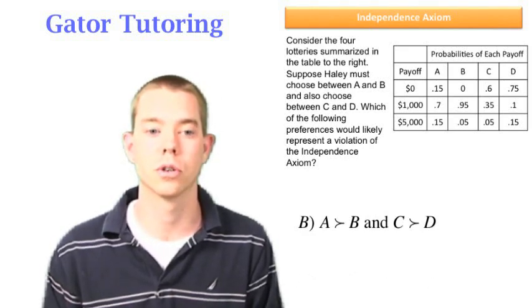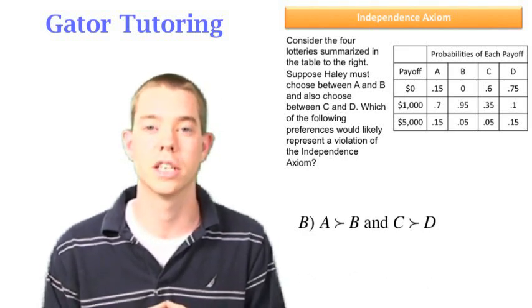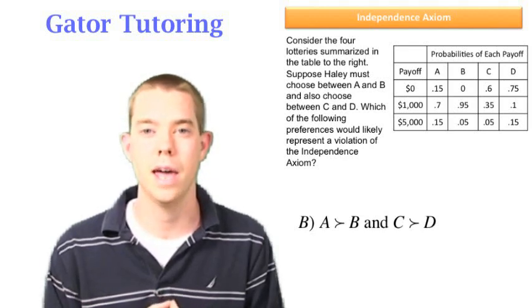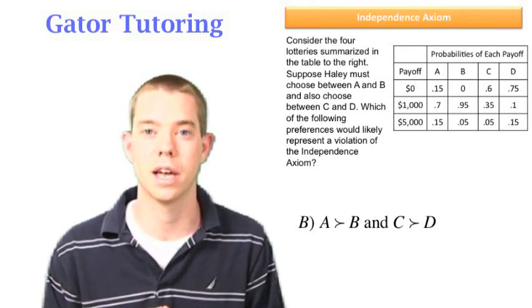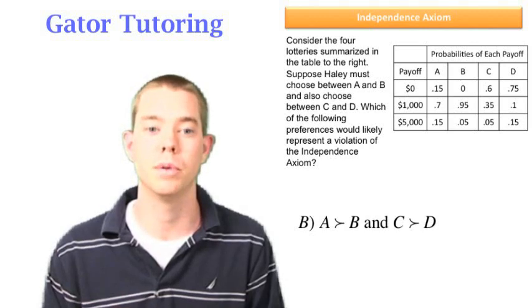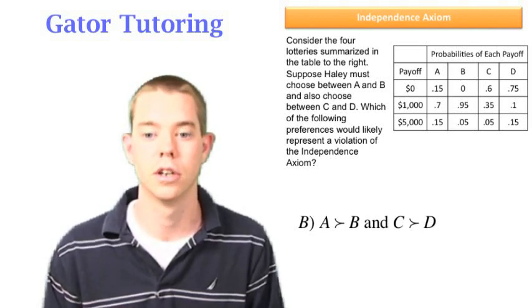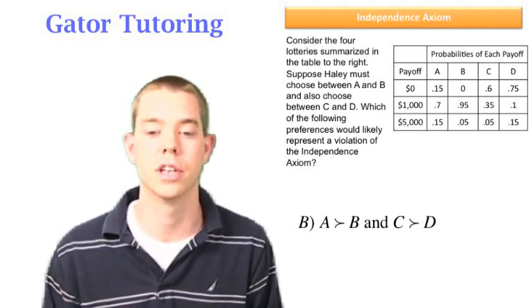So that leaves us with our answer, which is the correct answer, which says that we prefer A to B, and we prefer C to D. And this is wrong, because if we were to prefer A to B, we should also prefer D to C. So this likely represents a violation of the independence axiom.